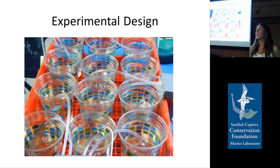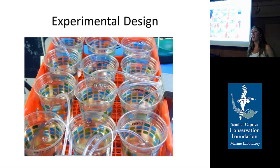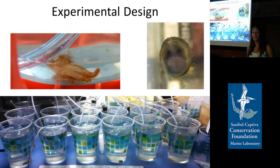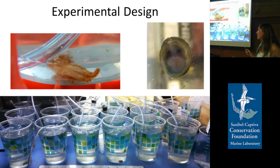I was interested in how much slipper limpets and Conrad's false mussels filter even though they're small, and what kinds of things might affect their clearance rate. My general experimental design was to fill vessels with filtered seawater, put a specimen in, add phytoplankton, and see how much they ate over a certain amount of time. I would starve specimens for at least 24 hours so they were nice and hungry when I did my experiment.